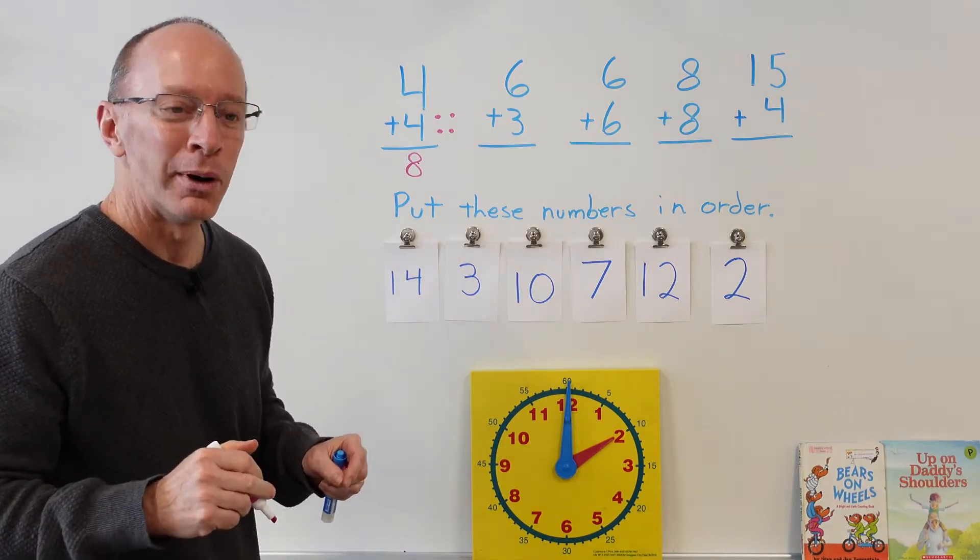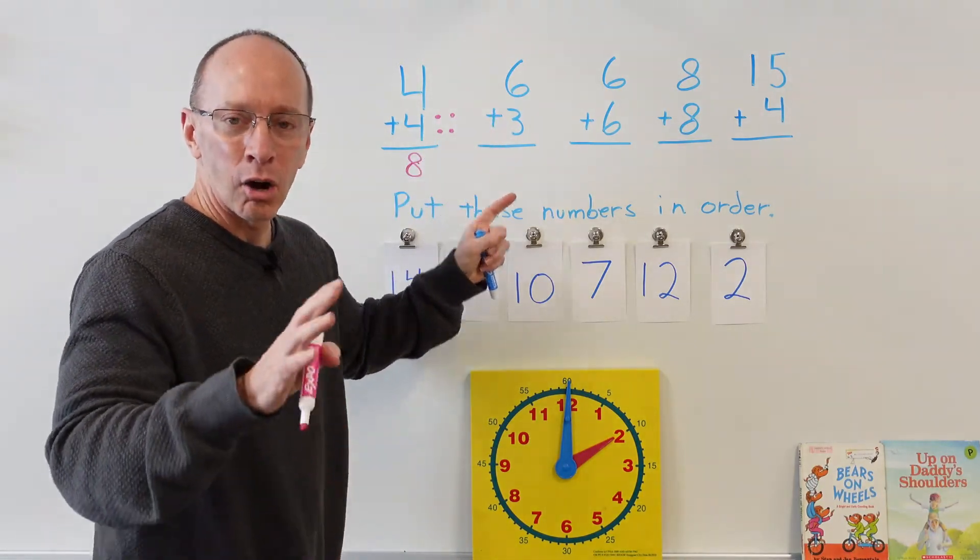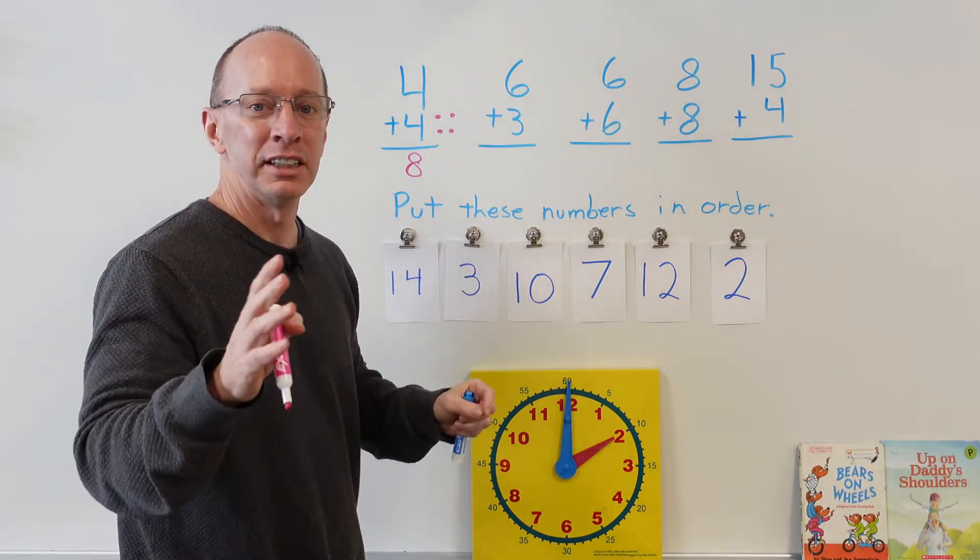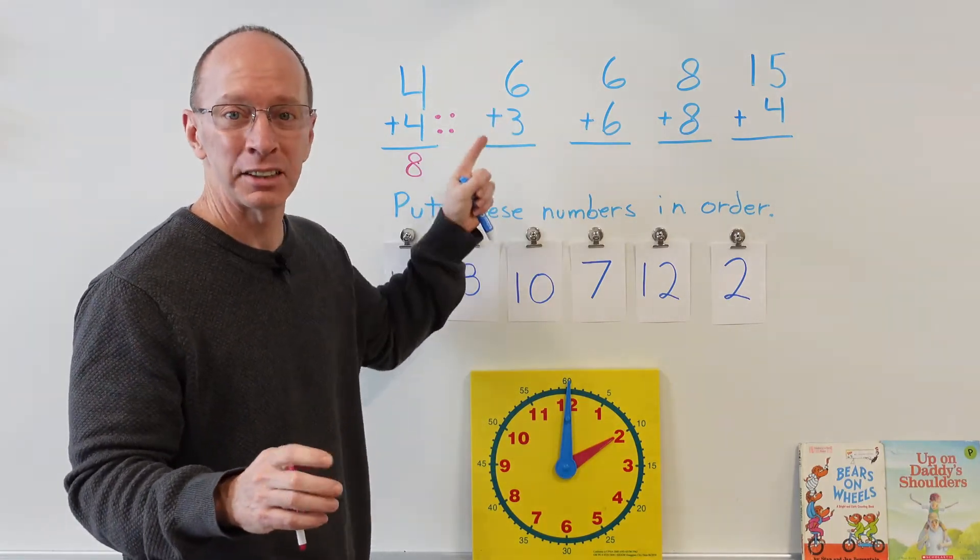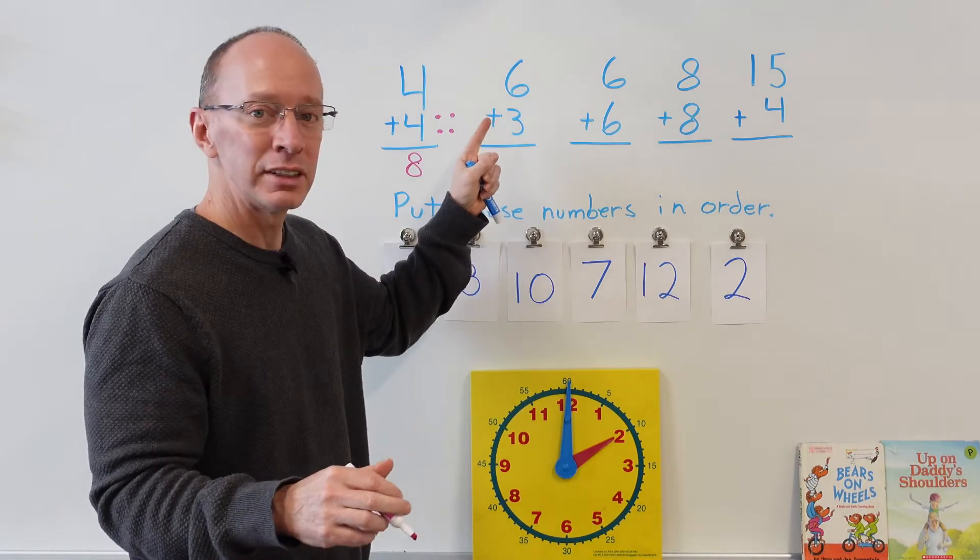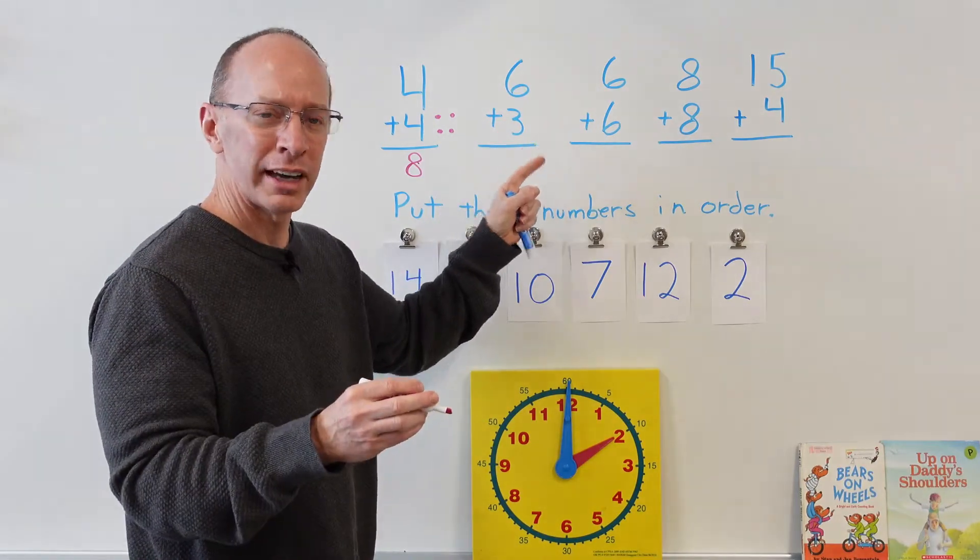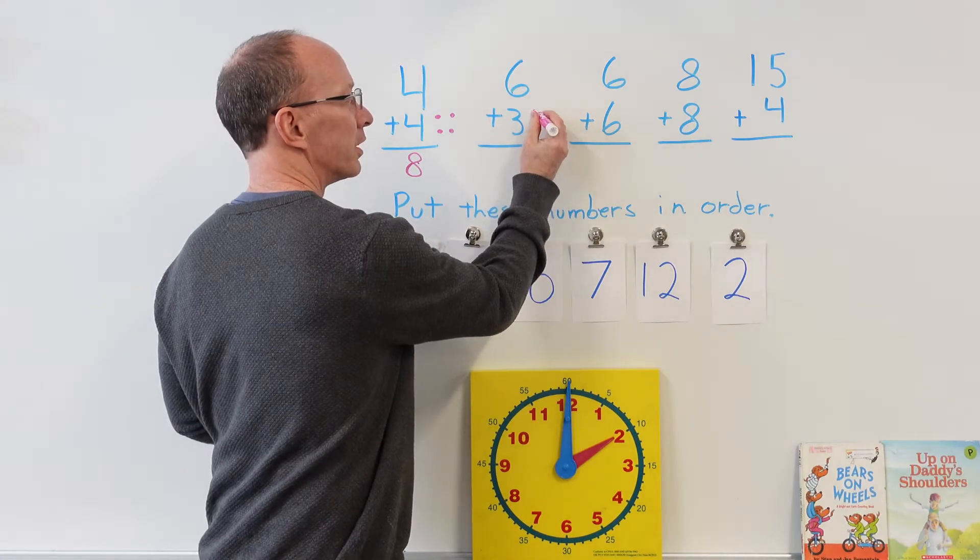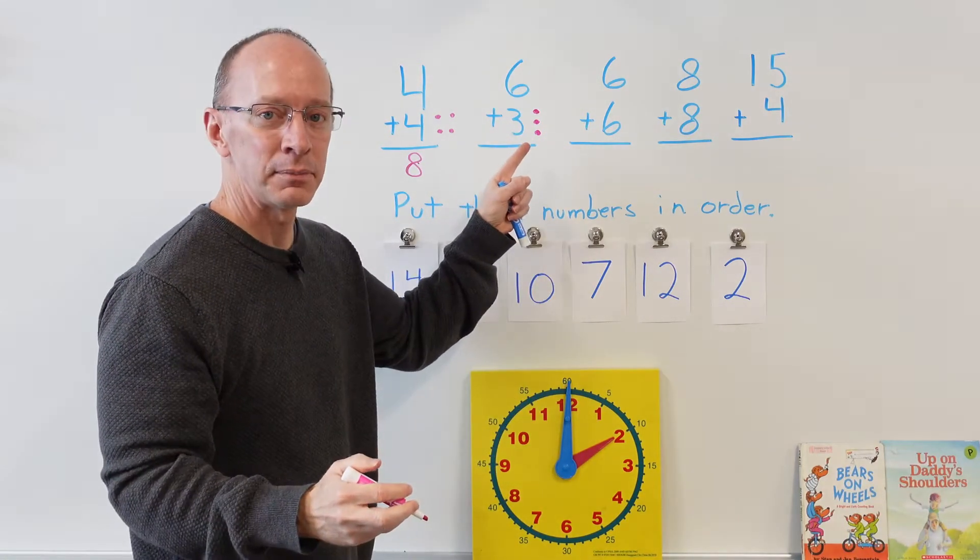All right, welcome back. Let's take a look here. When we add numbers I always like to add the biggest number first. So when we see six plus three, six is the biggest number. All right, so I would say six and then I would add the smallest number. What I'm going to do is I'm going to go ahead and put three dots for the number three: one, two, three.